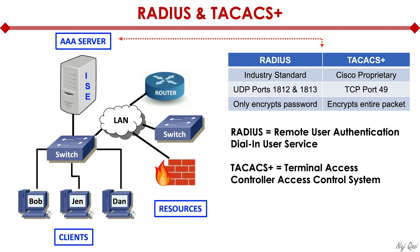The AAA server is very similar to Active Directory in that sense — it's a centralized database of all users with their credentials, username and password, and different attributes. For example, a help desk user might be given very limited access to a router, whereas a senior engineer might be given full access. TACACS+ has the ability to be that granular — it can limit what type of access users get when connecting to a router, firewall, or switch. RADIUS cannot be that granular. That's the purpose of a AAA server, using either RADIUS or TACACS+ to make it happen.